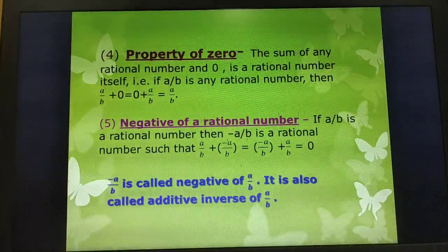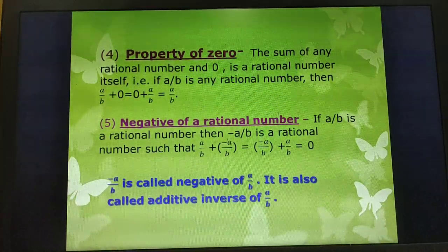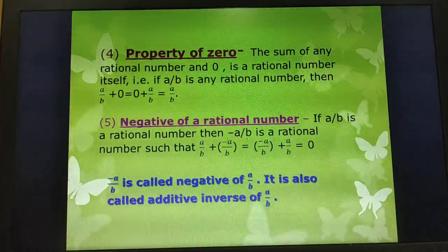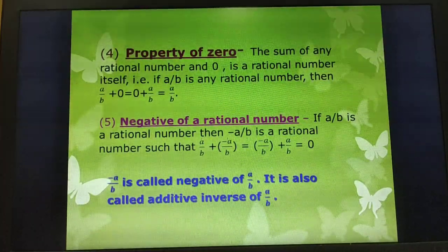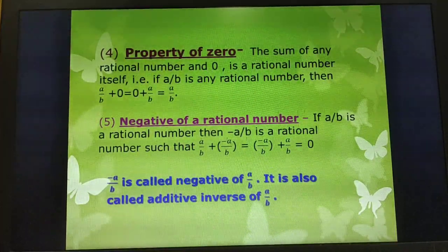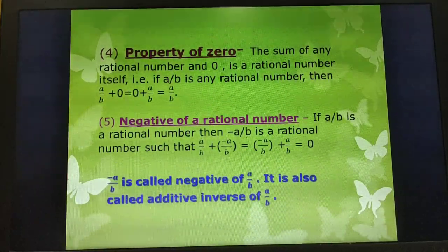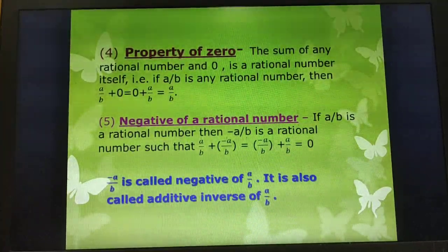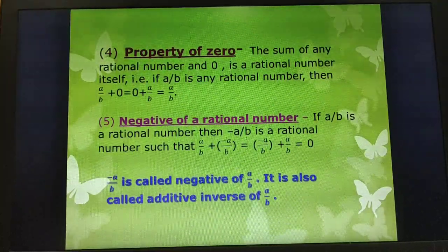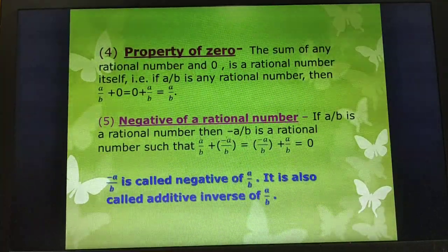Fifth is the negative of a rational number. If A/B is a rational number, then -A/B is a rational number such that A/B + (-A/B) = (-A/B) + A/B = 0. Here, A/B and -A/B are equal in magnitude but opposite in sign, so they cancel each other and the result is 0. Therefore, -A/B is called the additive inverse of A/B.